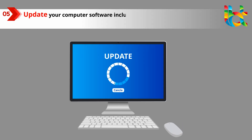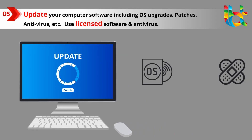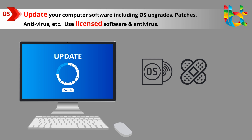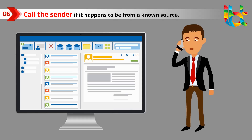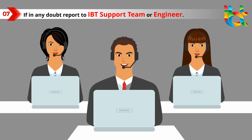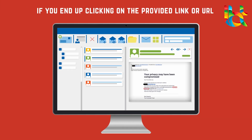Five, update your computer software including OS upgrades, patches, antivirus, etc. — use licensed software and antivirus. Six, call the sender if it happens to be from a known source. Seven, if in any doubt, report to the IBT support team or engineer if you end up clicking on the provided link or URL.